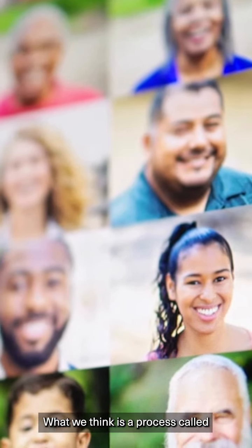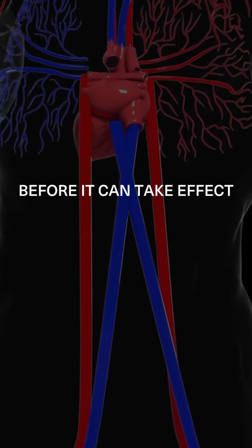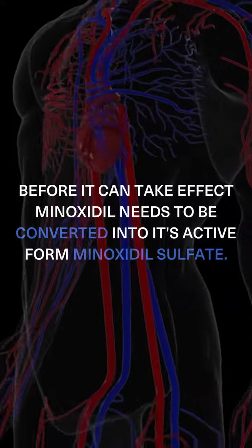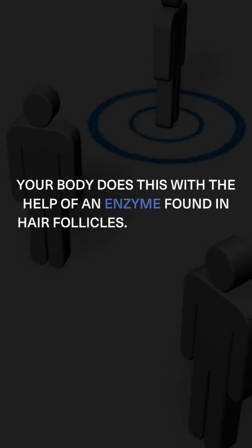What accounts for this is a process called sulfation. Before it can take effect, minoxidil needs to be converted into its active form, minoxidil sulfate. Your body does this with the help of an enzyme found in hair follicles.